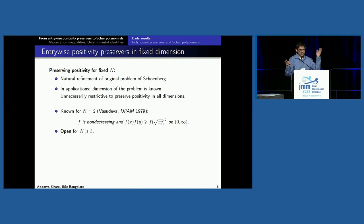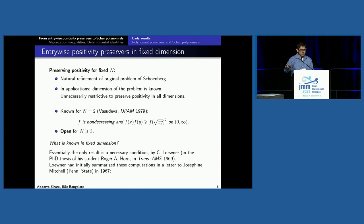What is known in 3×3 is at least a necessary condition, which dates back almost 60 years. It's by Löwner, and it appeared in print in the paper of his student Roger Horn. But Löwner initially summarized these computations in a letter to Josephine Mitchell. 1967 is the year before Löwner passed away, and 1969 is when Horn's paper was published, but as Horn says in the paper, the following is due to Löwner.